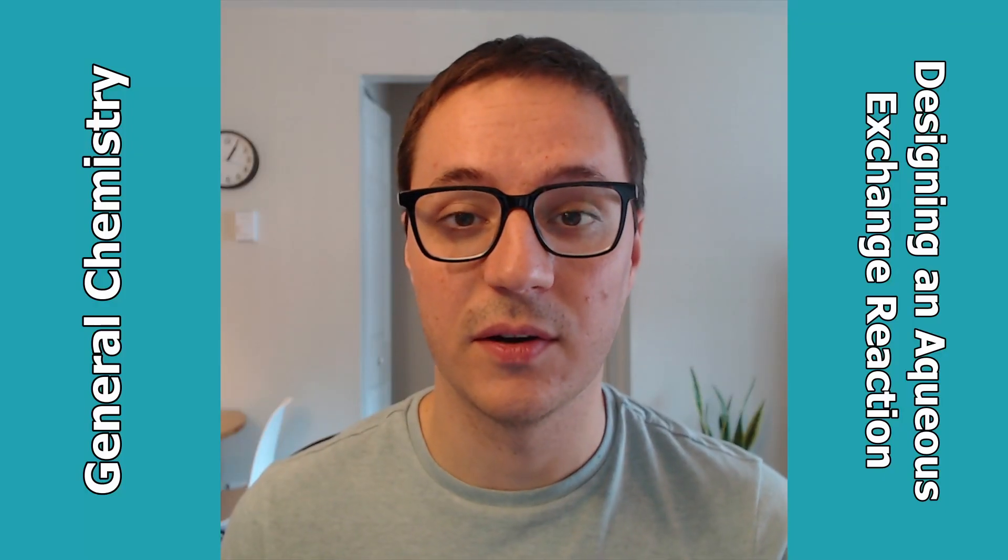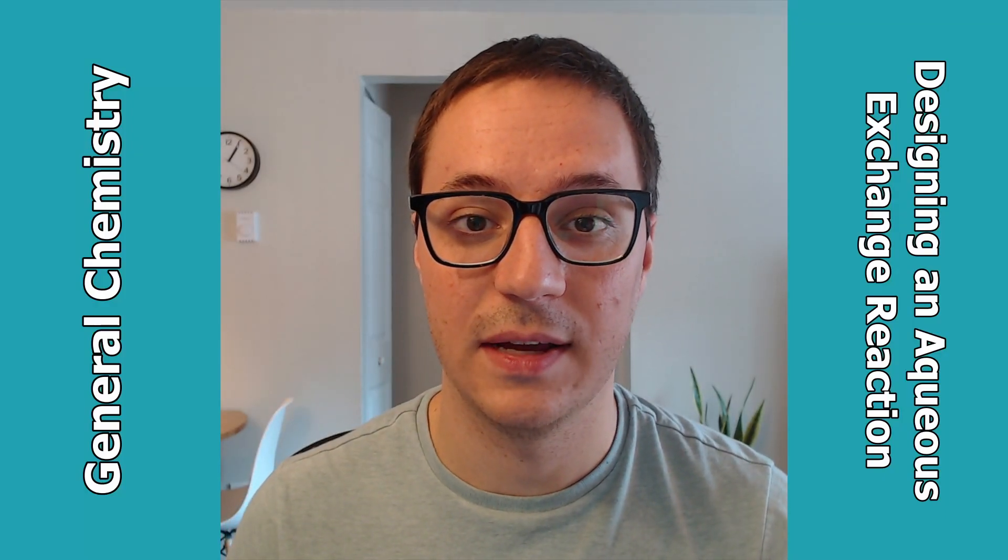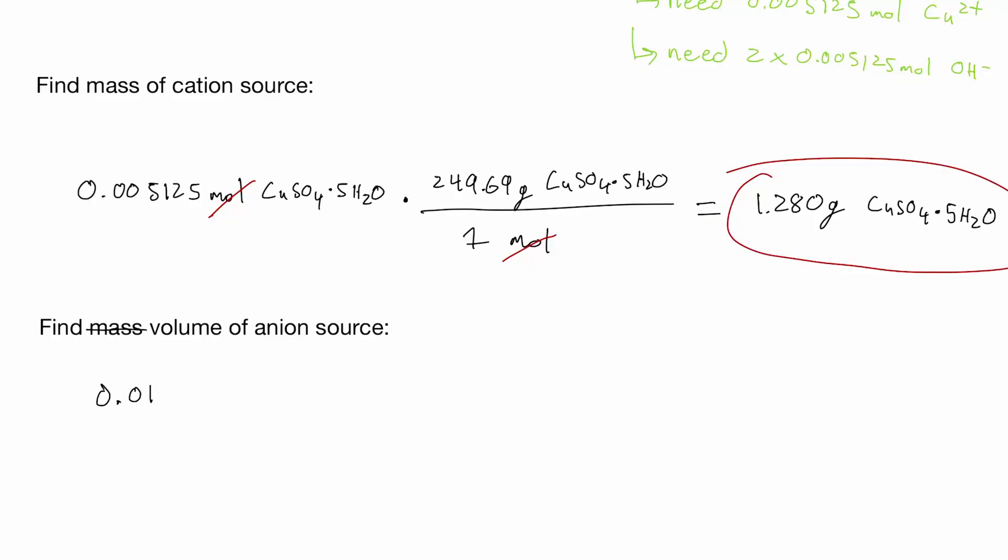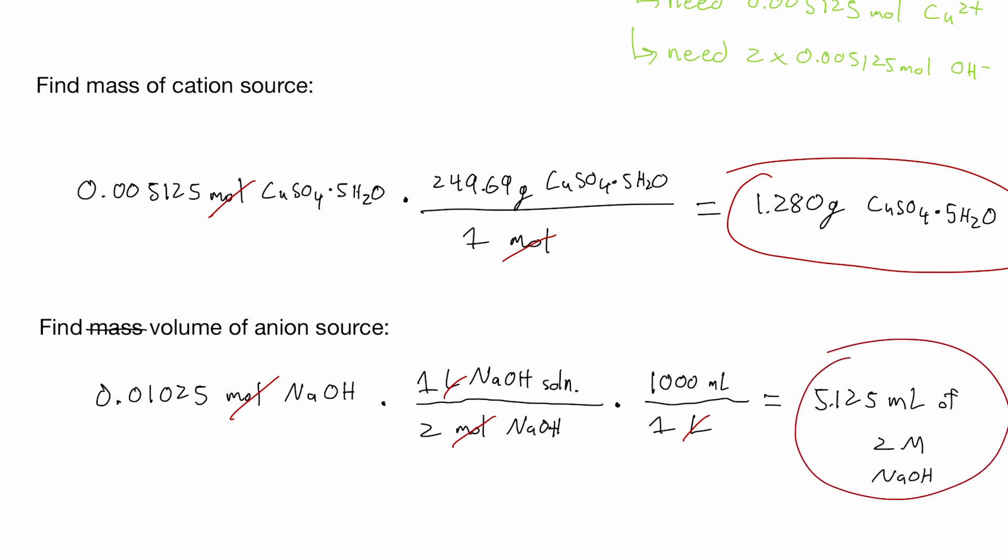A similar calculation is done for sodium hydroxide, except the number of moles are doubled due to that stoichiometry. Since this is a solution of sodium hydroxide, we'll use the concentration instead of the molar mass to find a volume instead of a mass. We'll also include a unit conversion to get an answer in milliliters, and that gives us a volume of 5.125 milliliters of that 2 molar sodium hydroxide solution.